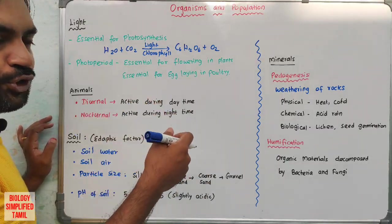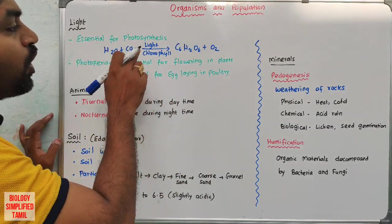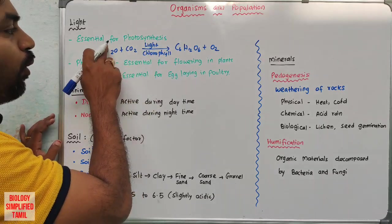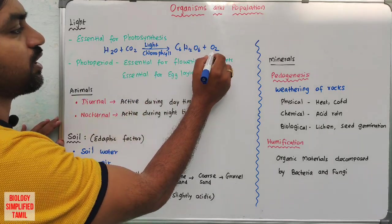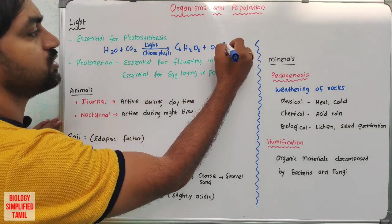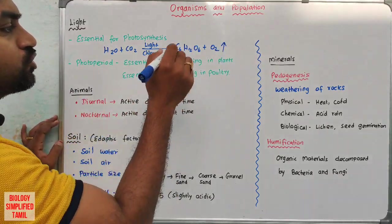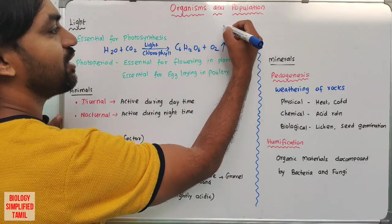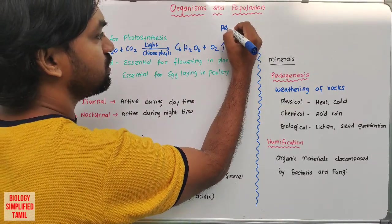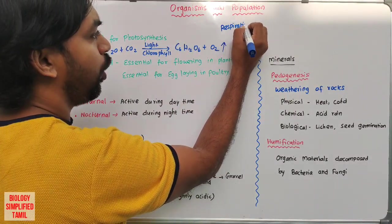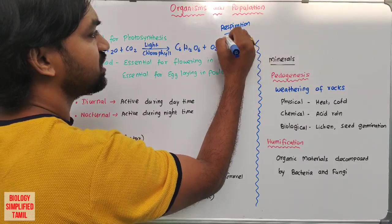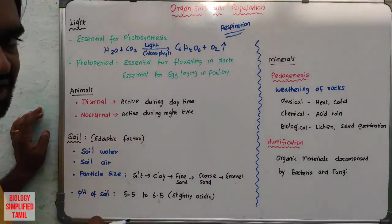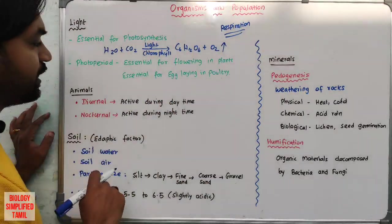Food source for all organisms comes from plants. In light, water breaks down and oxygen is released. This oxygen helps in aerobic respiration in all organisms.